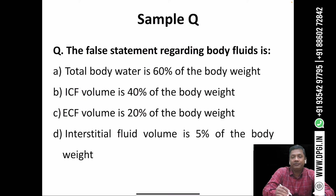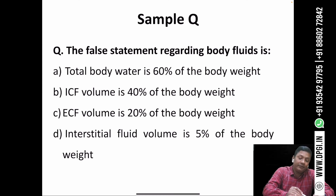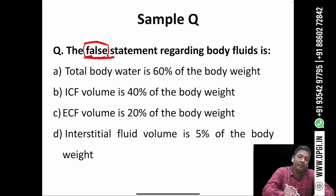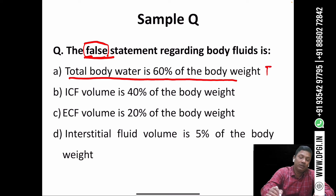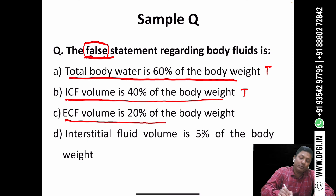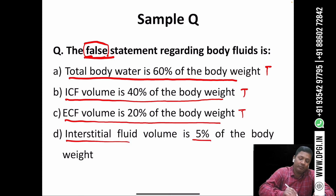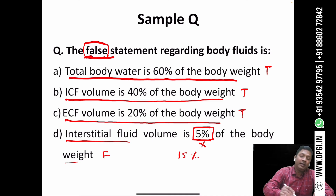Now let us look at some sample questions. Question: 'The false statement regarding body fluid is?' Total body water is 60% of body weight — true. ICF volume is 40% of body weight — true. ECF volume is 20% of body weight — true. Interstitial fluid volume is 5% of body weight — this is false, because interstitial fluid is 15% of body weight. So the answer is D.